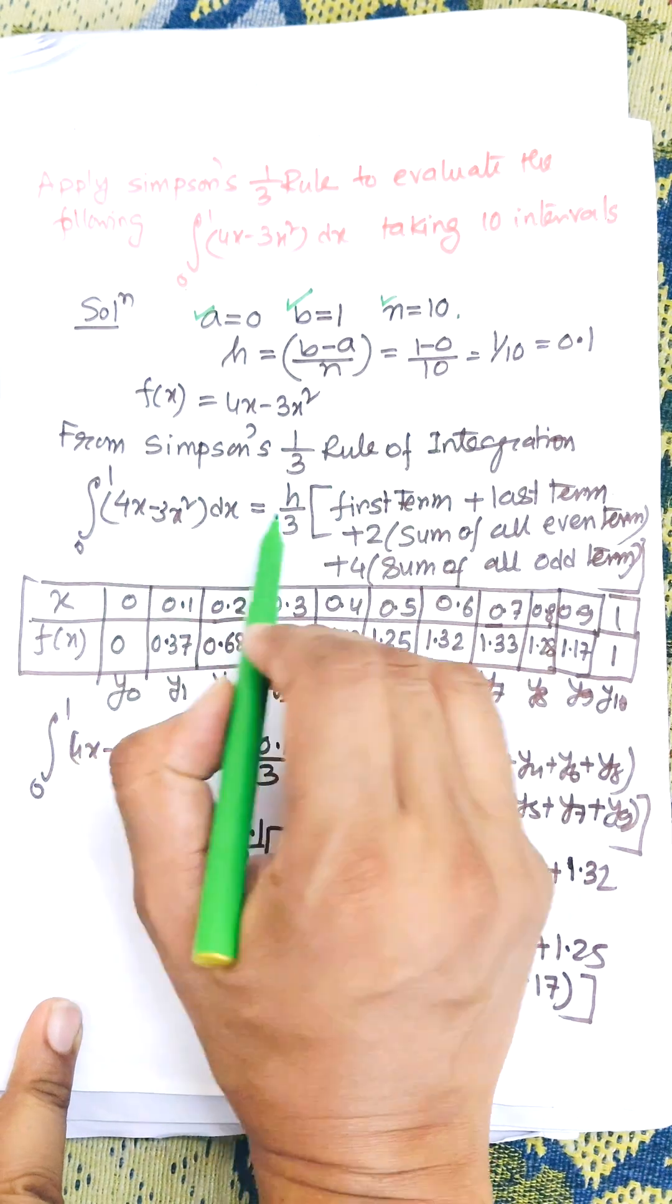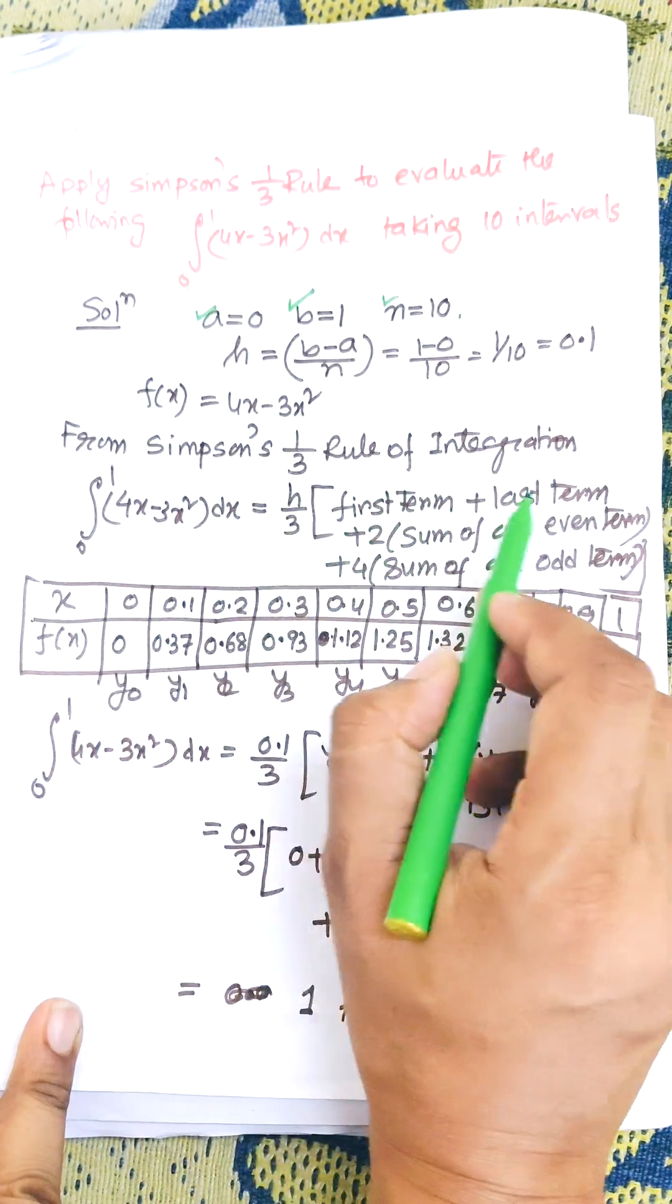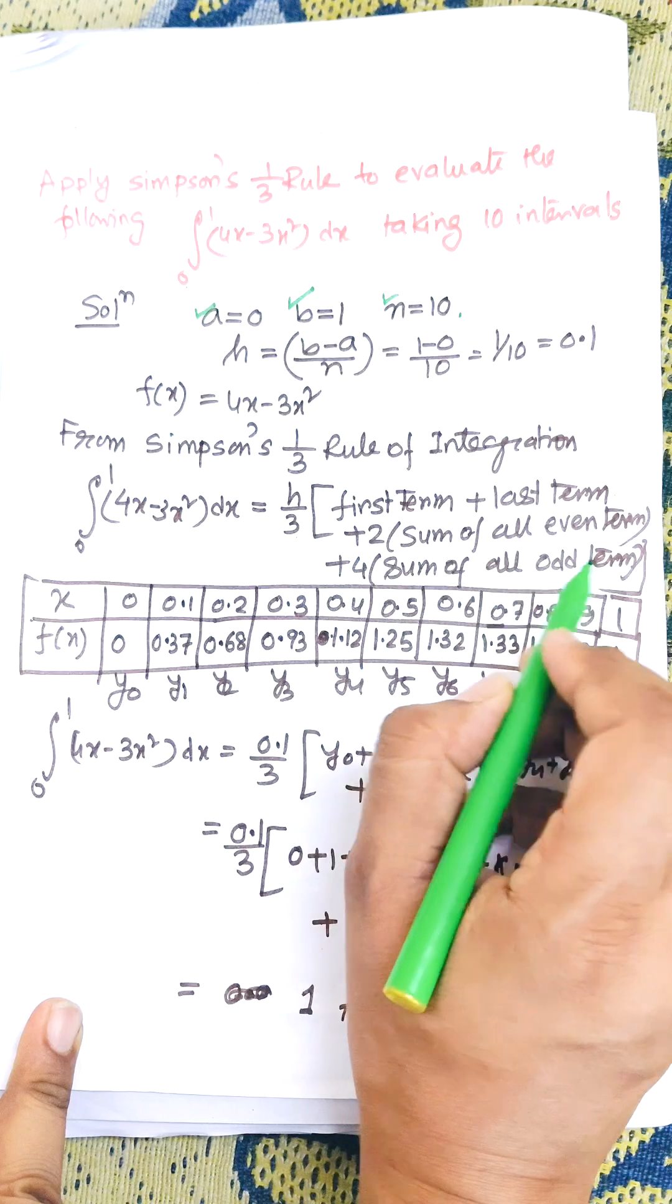Apply the formula: that is h by 3 times first term plus last term, 2 into sum of all even terms, plus 4 into sum of all odd terms.